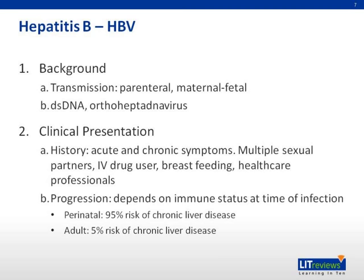Moving on to hepatitis B. This virus could either be transmitted parenterally or through a maternal-fetal route. It is a double-stranded DNA virus, part of the orthohepadnavirus family. The clinical presentation depends on whether the patient has acute or chronic hepatitis B. Patients with acute hepatitis B typically present with prodromal symptoms 30 to 180 days following exposure, followed by jaundice and tea-colored urine. In immunocompetent individuals, the hepatic inflammation resolves spontaneously with development of anti-HBS antibodies. However, in 5% to 10% of patients, the disease may progress to chronic hepatitis B infection.